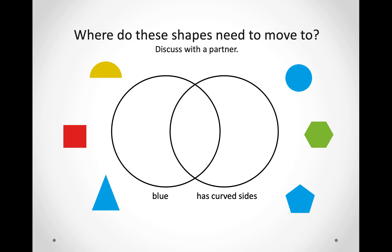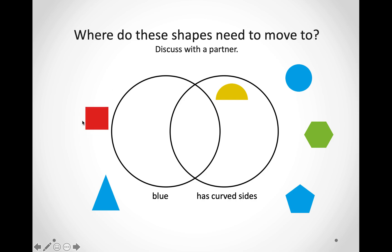Let us try another one — you can do this one with a friend or your brother or sister. We have shapes that are blue and shapes that have curved sides. Does this shape here have a curved side? Yes, I think it does. So, we are going to put it in the circle that says has curved sides, but we will not put it in the middle because it is not blue. Let us look at this shape. Does it have any curved sides? No, it does not. Is it blue? No, it's not. So, we are not going to put this shape anywhere because it's not blue and it does not have any curved sides.